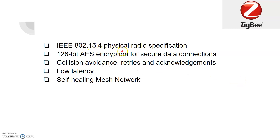ZigBee is an IEEE standard with the 802.15.4 physical radio specification. It has secure communication using a 128-bit Advanced Encryption Scheme for secure connections. It also has a collision avoidance mechanism — if a channel is already busy, it will retry sending the data. Each data transmission has an acknowledgement, and it has low latency.